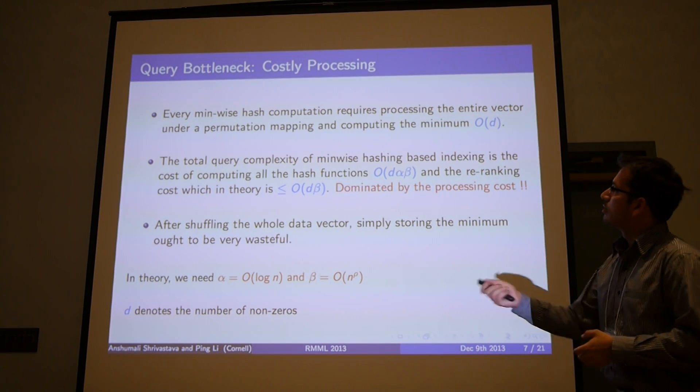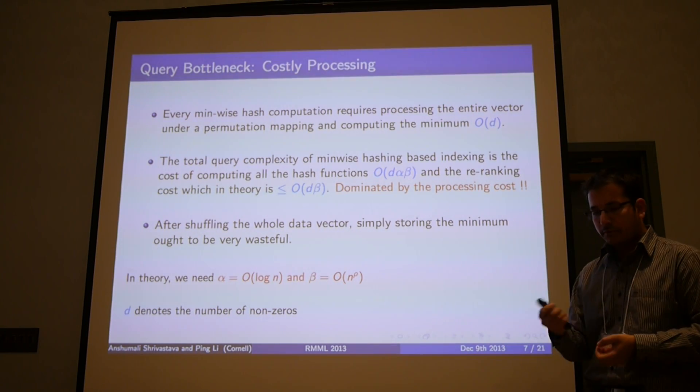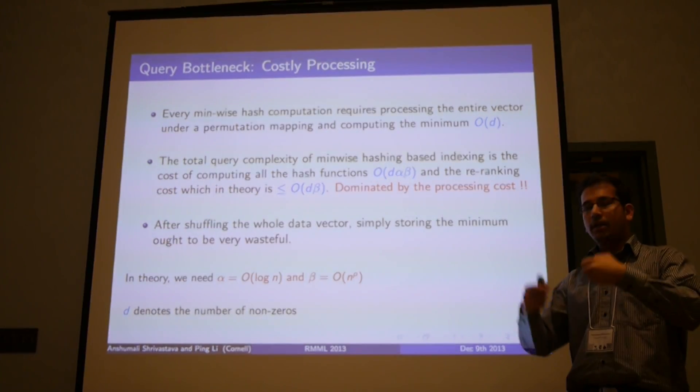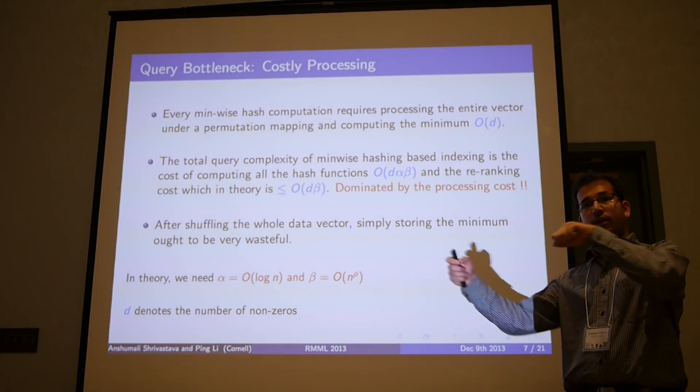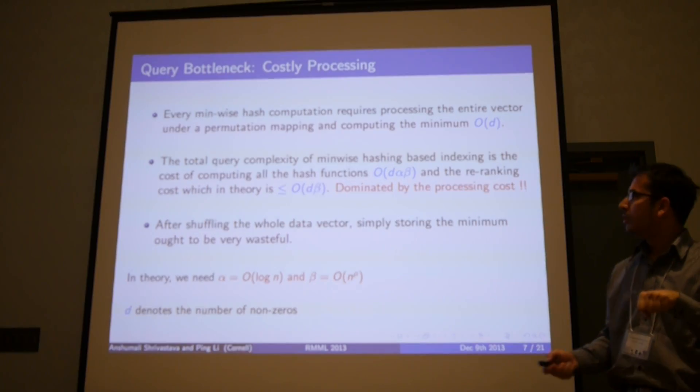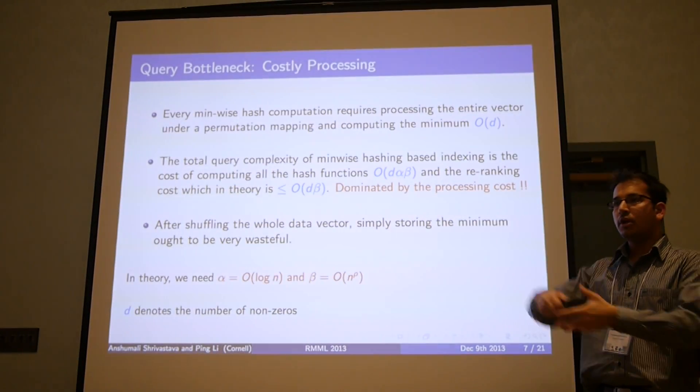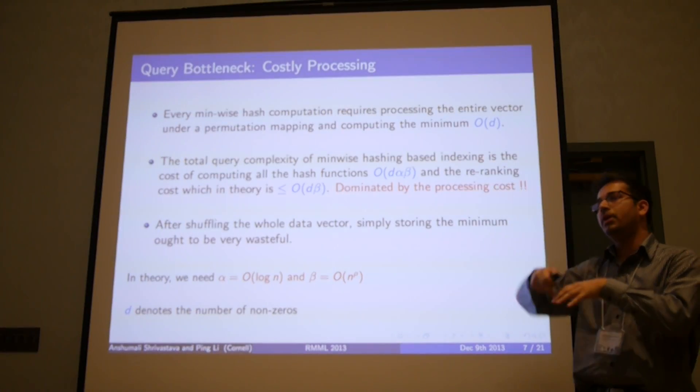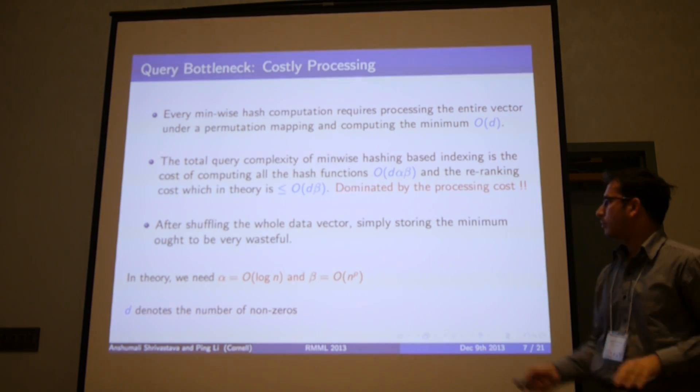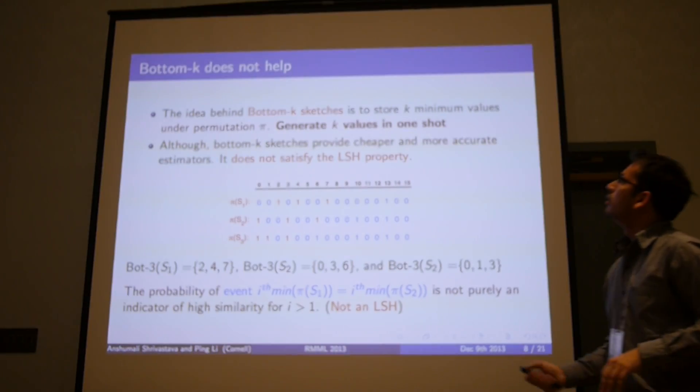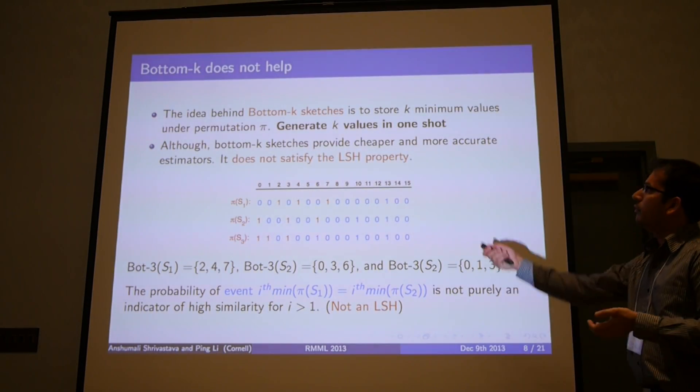One thing is, if we look at the process of minwise hashing, we are taking a whole vector, shuffling it, and then only looking at the minimum. If we are only looking at the minimum, it ought to be wasteful because we are not looking at what is happening on the other end of the data. There were other ideas even back in 98.